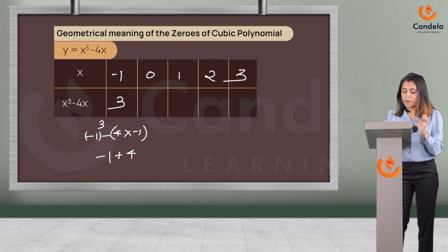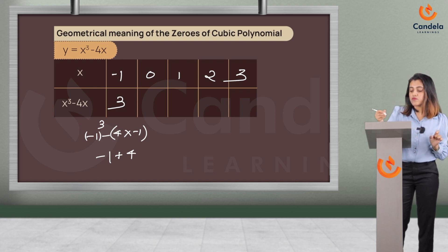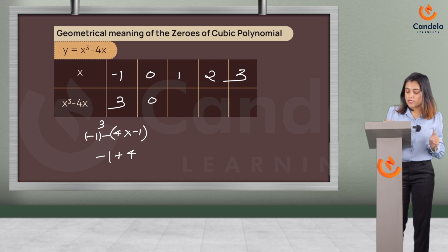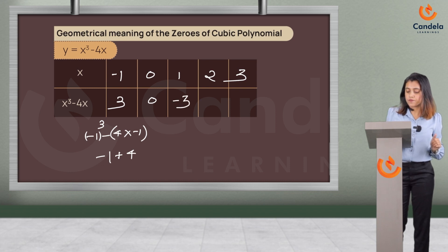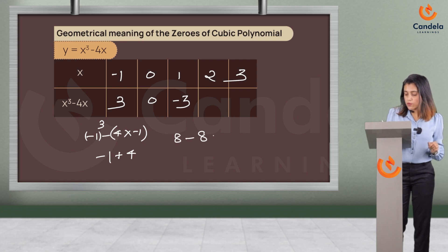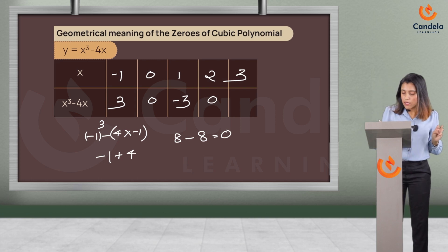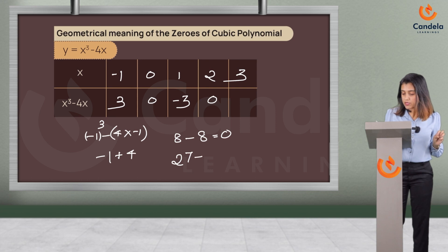If x is 0, y becomes 0³ minus 4 times 0, which is 0. If x is 1, the corresponding value of y is 1³ minus 4, which is minus 3. If x is 2, y becomes 2³ minus 4 times 2, which is 8 minus 8 = 0. And if x is 3, then y becomes 3³ minus 4 times 3, which is 27 minus 12 = 15.